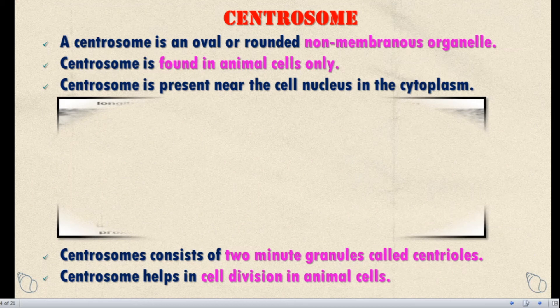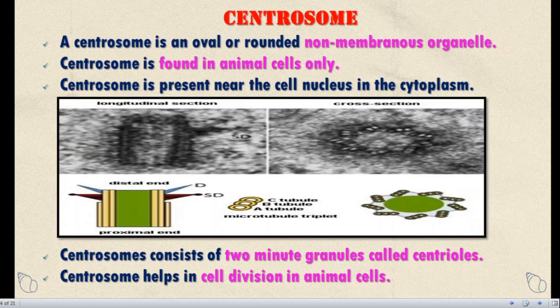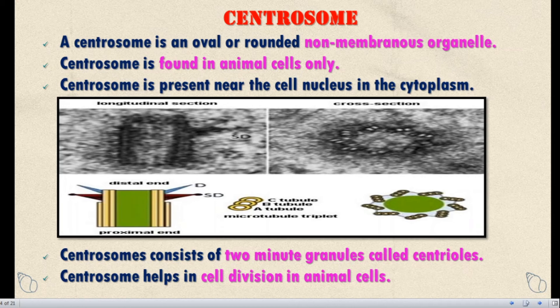Next, Centrosome. Centrosome is an oval or rounded non-membranous organelle — it is not covered by a membrane. Centrosome is found only in the animal cell, present near the cell nucleus in the cytoplasm. Centrosome consists of two minute granules called centrioles. Centrosome helps in cell division in animal cells.